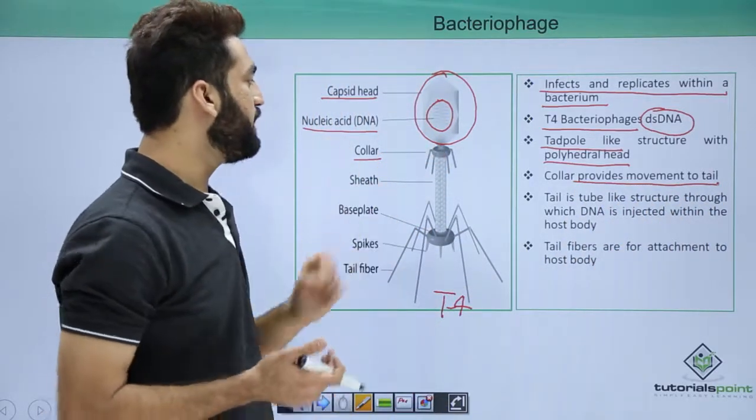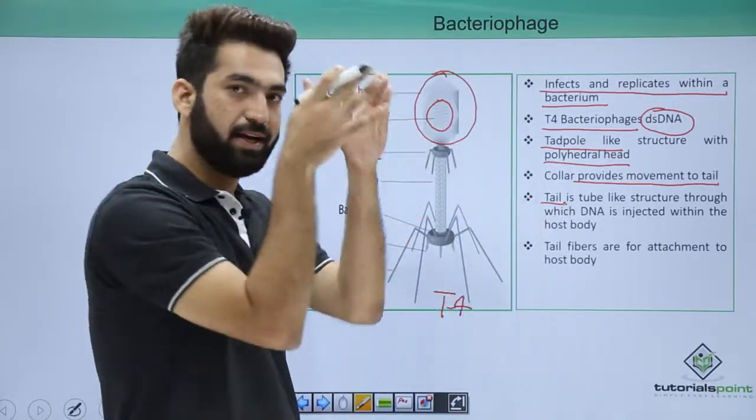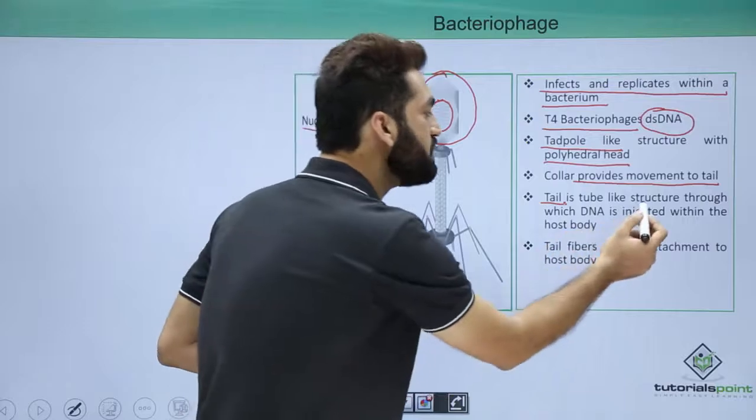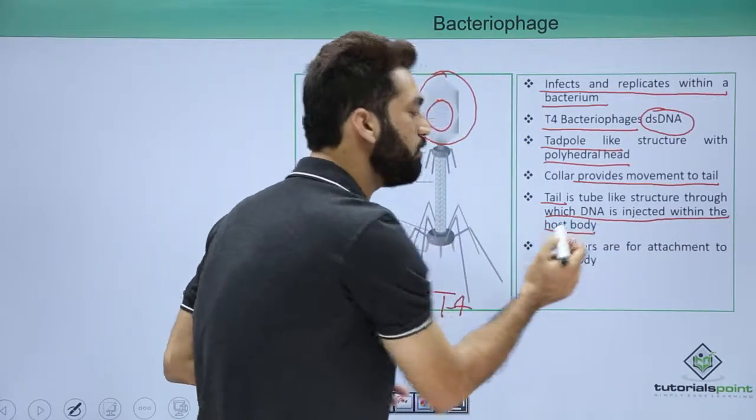The collar is there to provide movement to the tail. When you talk about the tail, it is a cylindrical-shaped structure, and this structure is the structure through which DNA will be injected into the host body.